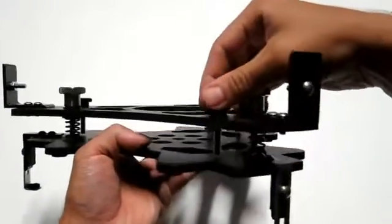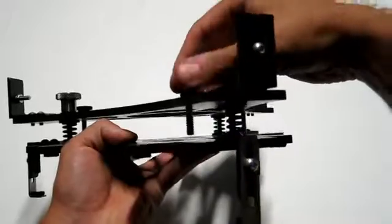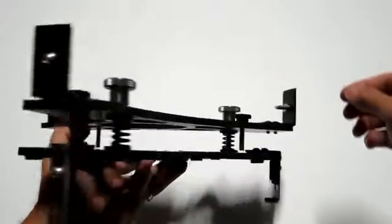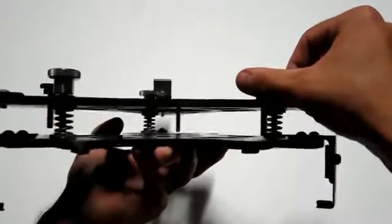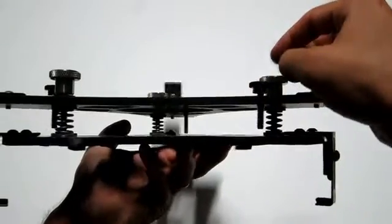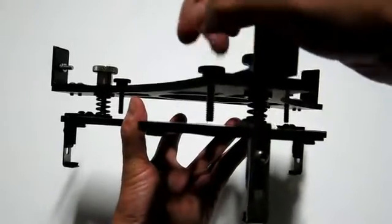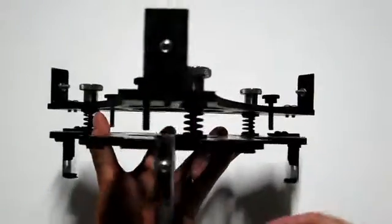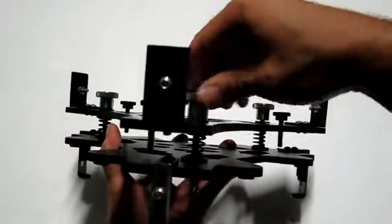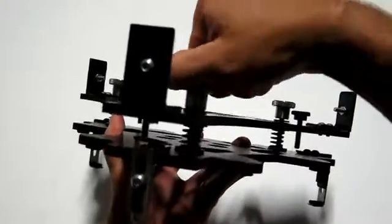You can now adjust the spacing between the upper and lower plates by turning the collimation knobs. Make sure the locking knobs are backed out enough to not interfere with the movement of the plates. A good starting point is about three quarters of an inch spacing between the plates. This will give you plenty of collimation adjustment once your mirror is attached.